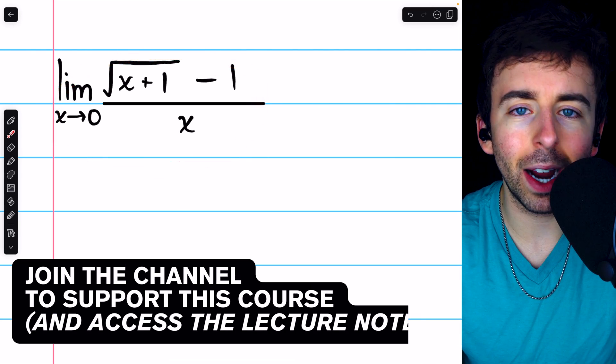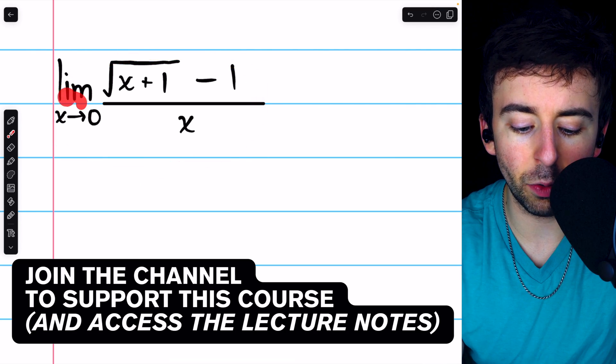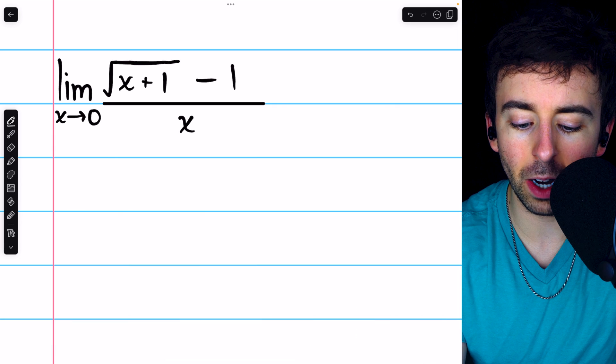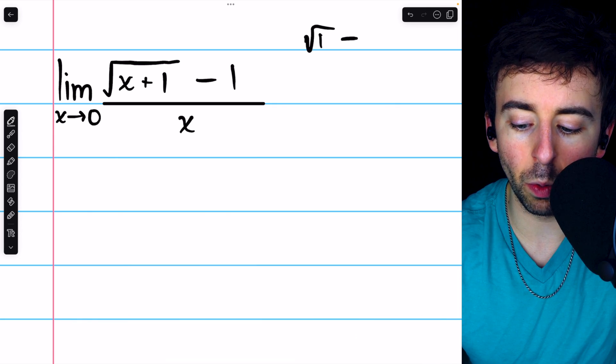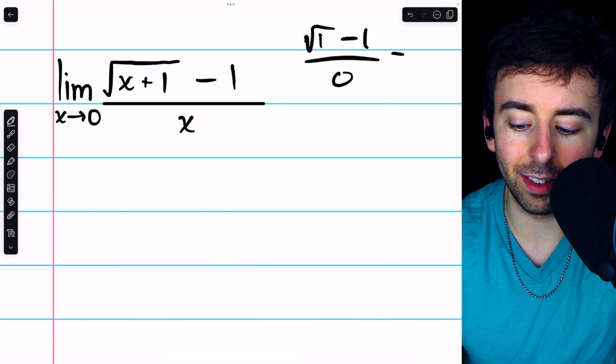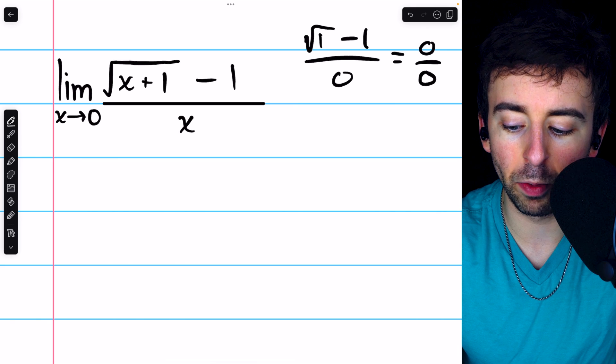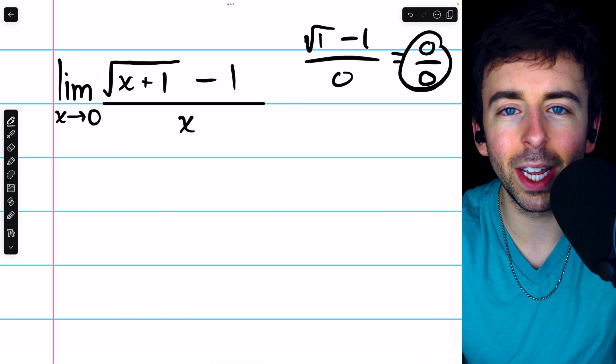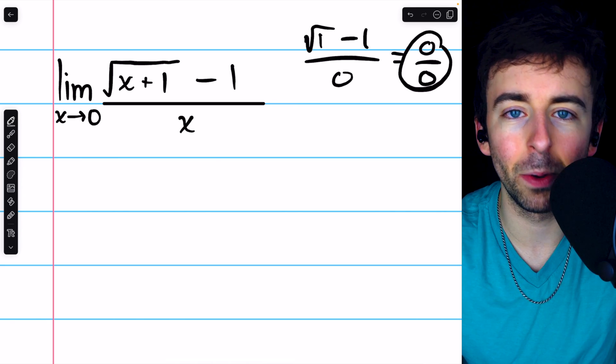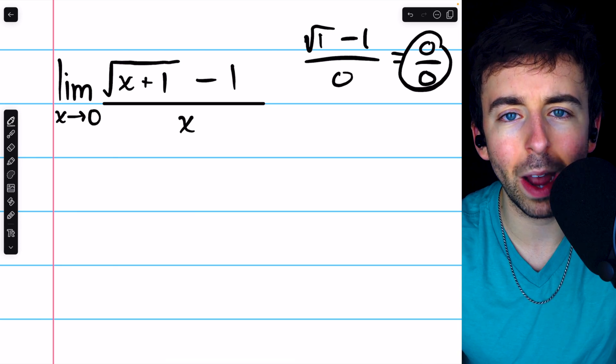We can't evaluate this limit directly by substitution, because if we were to plug in x equals 0, we would have the square root of 1 minus 1 divided by 0, and that's 0 over 0. This is indeterminate, it doesn't tell us anything about the limit, so we need to use a different strategy.